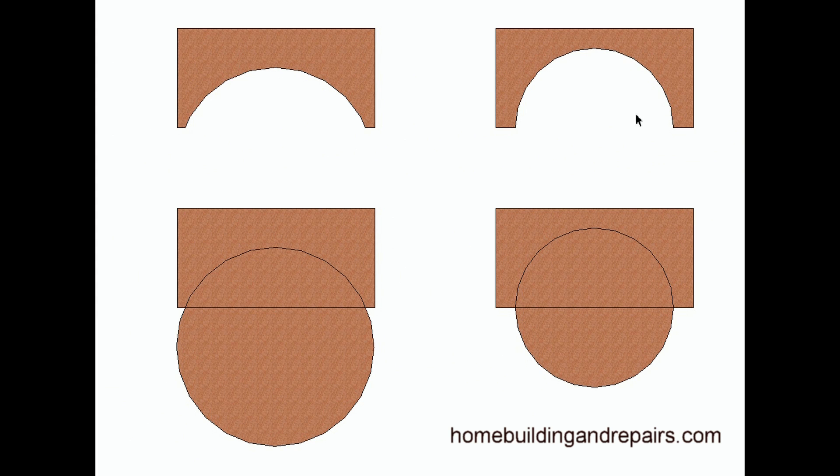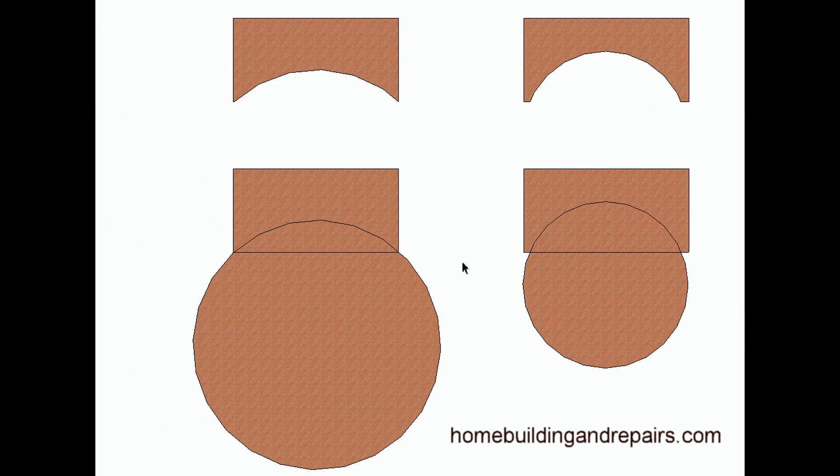And this one here, we have the same thing, a larger arch. This would be a half circle. This one right here wouldn't, but this would be something where we actually moved the circle down. And this one, of course, would be where we moved the circle down even farther.